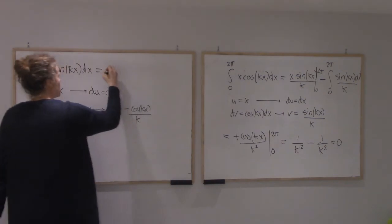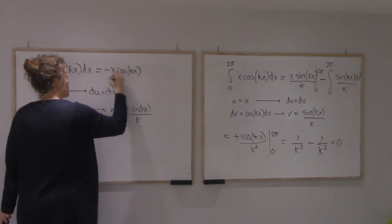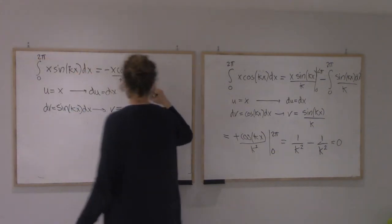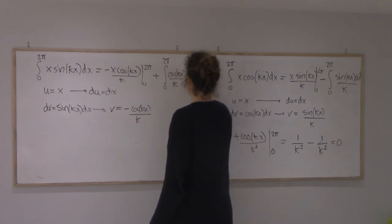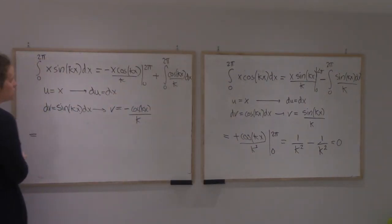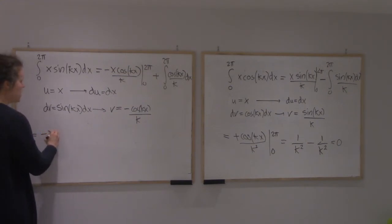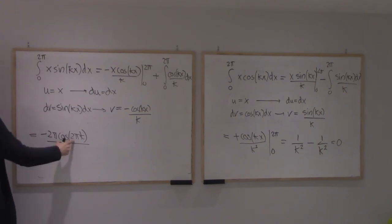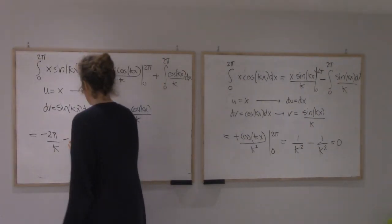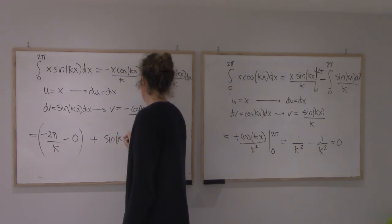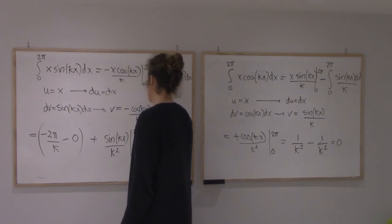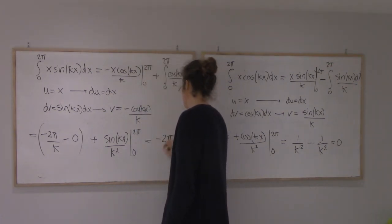And so I'm getting minus x cos kx over k from 0 to 2π, and then I need to add this integral from 0 to 2π of cos kx over k dx. This one is minus 2π cos 2πk over k. So that's a 1. So 2π, if I plug in 0, I'm going to get 0 because of that x in front. Now this one is going to give me sin kx over k squared, and I'll plug in 0 and 2π and get 0. So here I'm getting minus 2π divided by k.